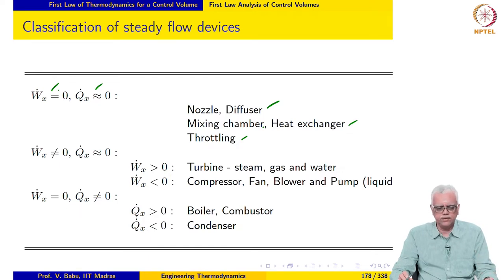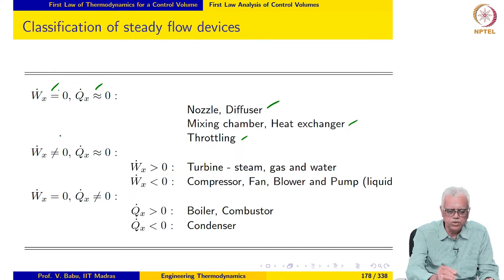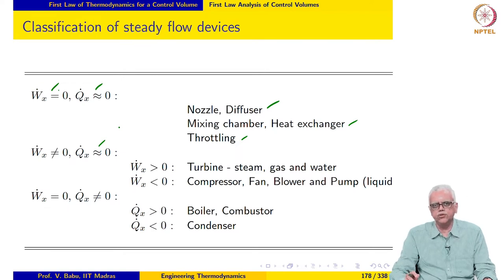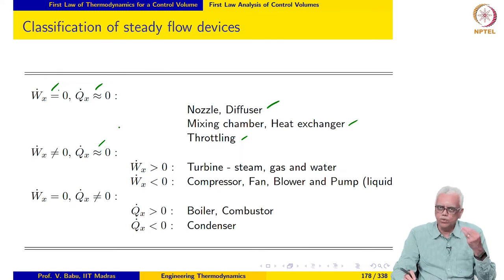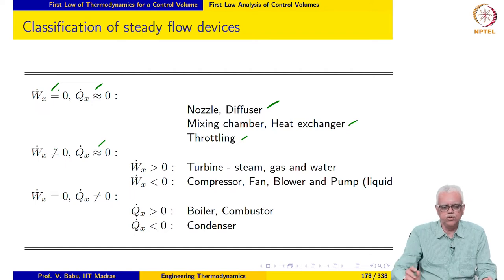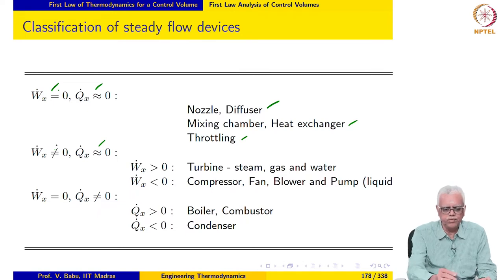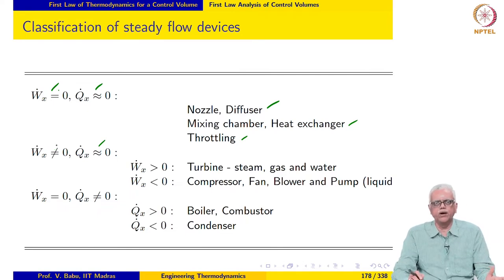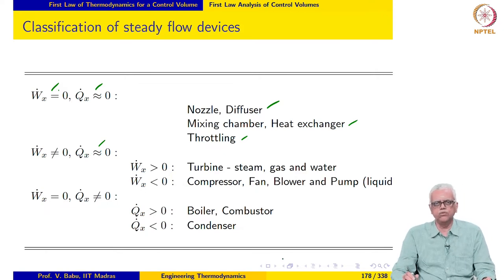The next set of devices are ones for which W_x dot is not equal to zero, but Q_x dot may be assumed to be zero — negligibly small. Normally Q_x dot may be much less than W_x dot in these cases. For these types of devices, W_x dot may be of the order of megawatts and Q_x dot may be less than 1000 watts, so it is very small compared to W_x dot and may be neglected safely.